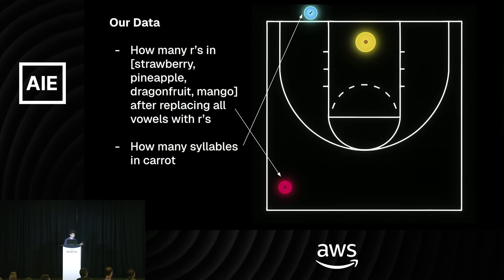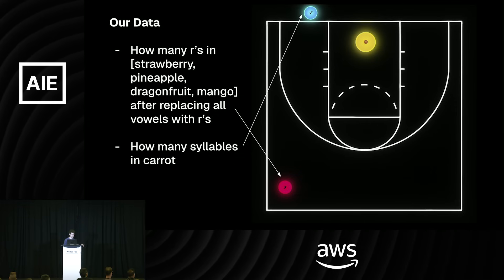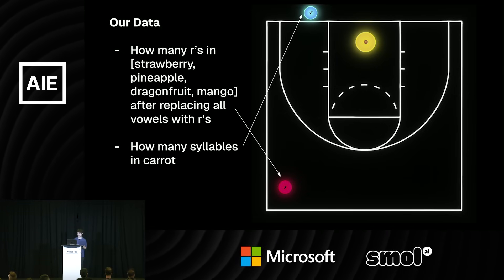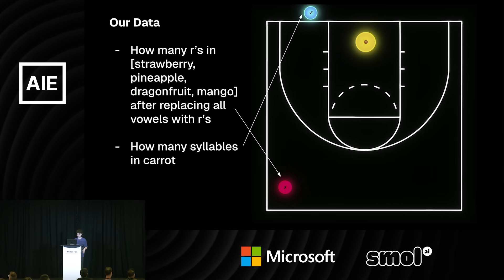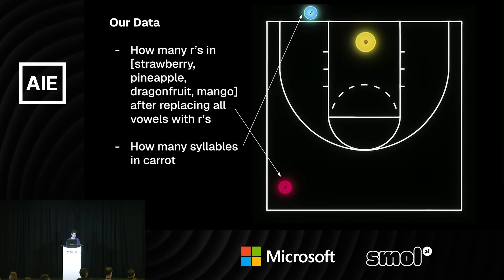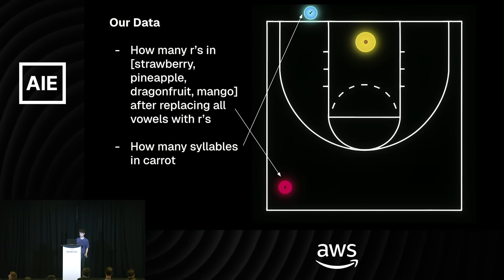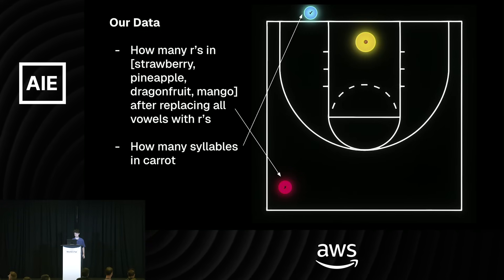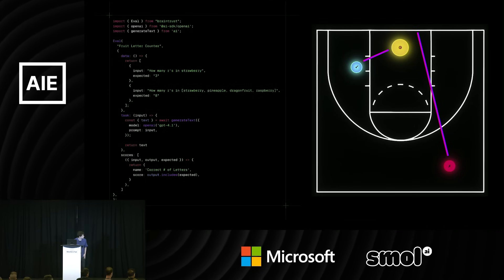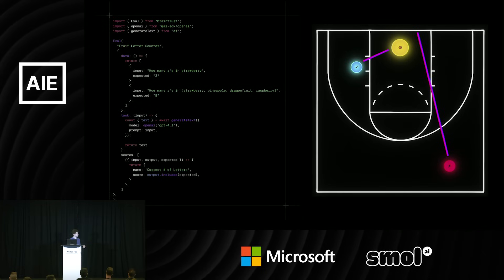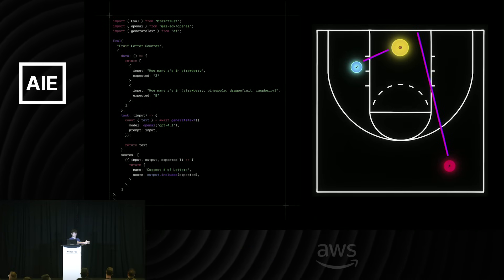Two more prompts: 'How many R's are in strawberry, pineapple, dragon fruit, mango after we replace all the vowels with R's?' — an insane prompt, but still technically in our domain, so we label it red all the way down. But 'how many syllables are in caret?' — that's out of bounds. None of our users are actually going to ask that; it's not part of our app. When you're making an eval: your data is the point on the court, your task — what Braintrust calls a 'task' — is the way you shoot the ball towards the basket, and your score is a check of did it go in the basket or not.